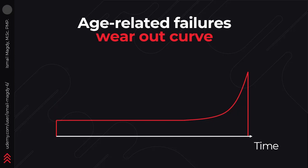Here we have another age-related failure pattern which is called the wear out curve. The difference between the bathtub curve and the wear out curve is that in the wear out curve we don't have the infant mortality phase, which means the asset will have a low level of failures in the beginning of its lifetime, until in the end we start having high failures because of the normal wear and tear.